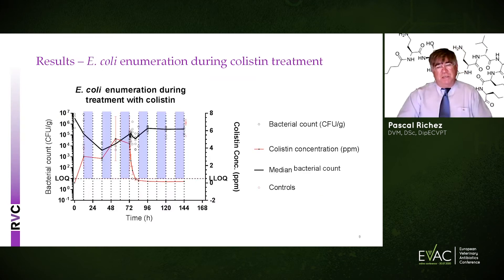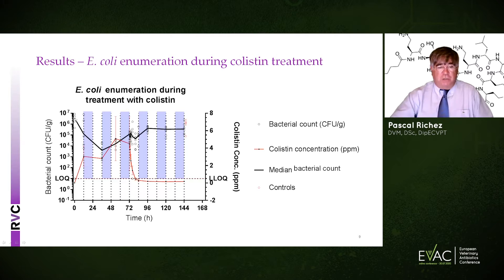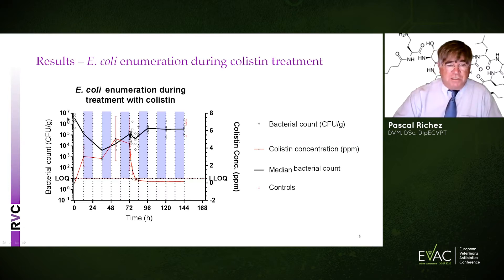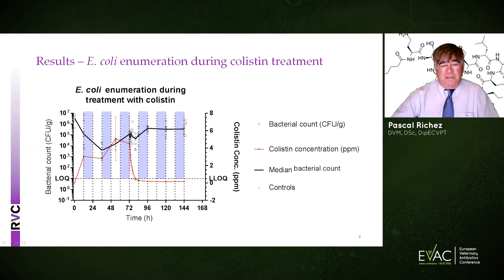These results are very interesting. We have overlaid on the same curve E. coli numbers in the gut and colistin concentration in the gut. The black line shows the population of E. coli, which decreased — on a log scale — by a factor of 10,000, then slightly increased by a factor of 100, and then recovered slowly. After one week, it returned to where it was at the beginning.